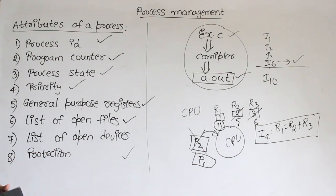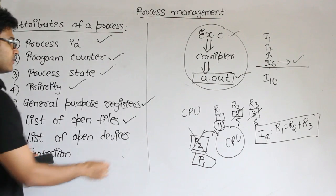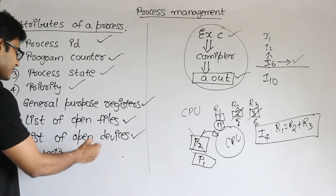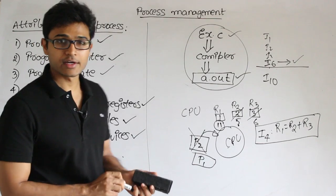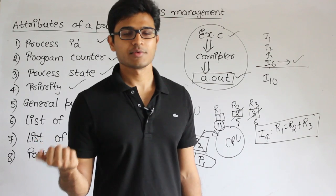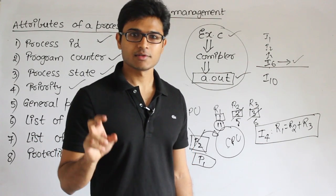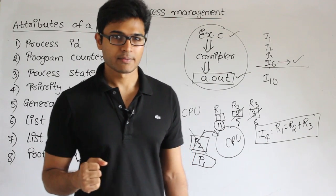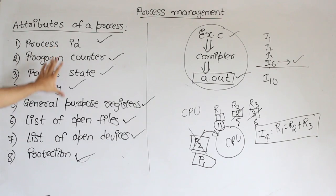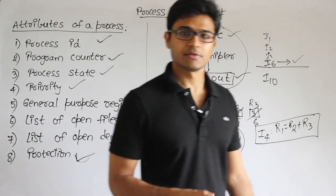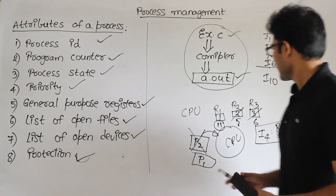Next is List of Open Devices — think of printers, scanners, and other hardware devices. You should maintain a list of these. Protection is also important: a process is not supposed to enter another process's workspace, and other processes are not supposed to get into yours. The operating system should protect you from others and stop you from accessing other data. All this information will be maintained in the process's identity card, just like how our identification cards work.